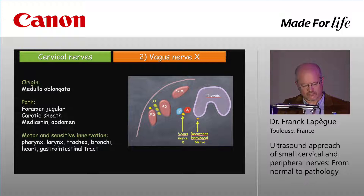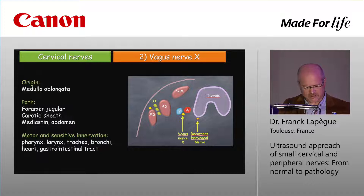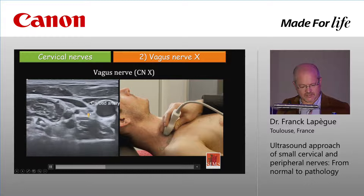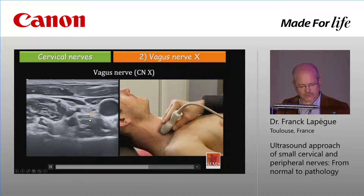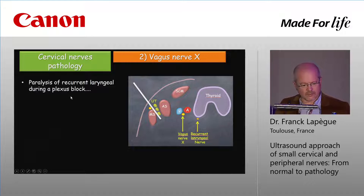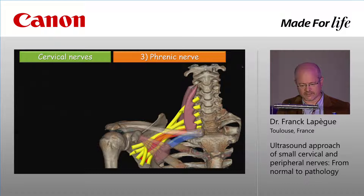The second nerve is the vagus nerve. It comes from the medulla oblongata, crosses the jugular foramen, and then travels inside the carotid sheath. Then it travels in the mediastinum and gives a small recurrent branch — the recurrent laryngeal nerve — then it reaches the abdomen. It provides motor and sensitive innervation for the pharynx, larynx, trachea, bronchi, heart, and gastrointestinal tract. In this demonstration: the two landmarks are the jugular vein and the carotid artery, and the nerve is right here in short axis axial view. I tilt the probe to show you the long axis of this nerve — it's quite easy to see. During plexus block, you can observe paralysis of the recurrent laryngeal nerve caused by diffusion of anesthesia.